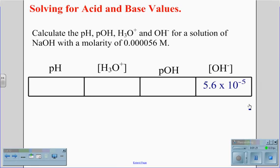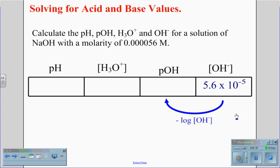Now that we have the OH- concentration value from the molarity of NaOH, we are going to convert the OH- concentration to pOH, the per-hydroxide value. This will be done by taking the negative log of the concentration. In our calculator, we use negative log of 5.6 times 10 to the negative 5th, which comes out to a value of 4.25.